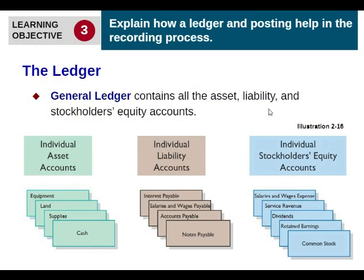So what is the ledger? There is a general ledger and there are also subsidiary ledgers. A ledger is just a running balance of each account under the individual elements — it has all the asset, liability, and stockholders' equity accounts. There are many different ledgers: one for equipment, cash, supplies, accounts receivable, depreciation, interest payable, notes payable, accounts payable. All the respective accounts have a respective ledger.